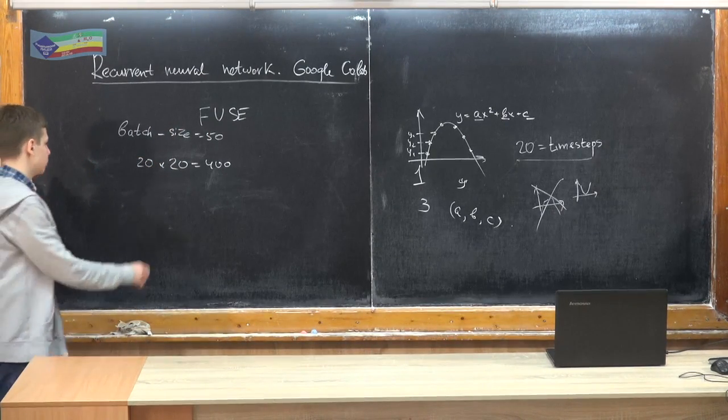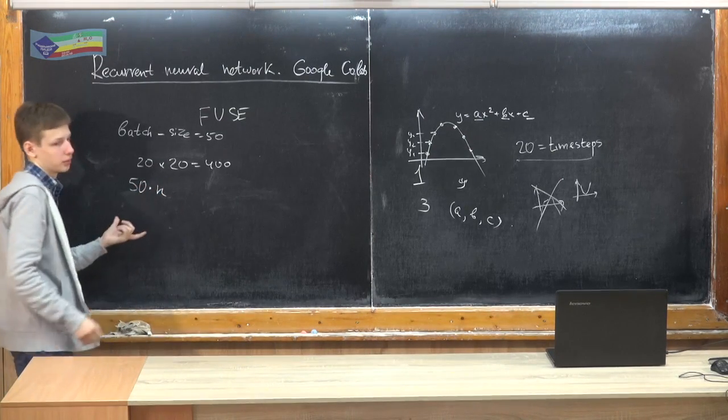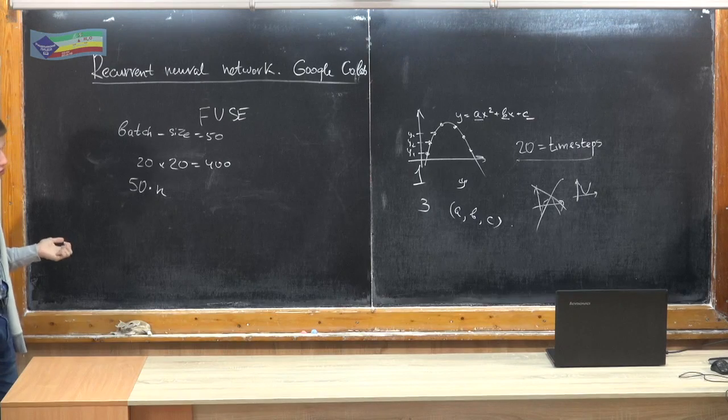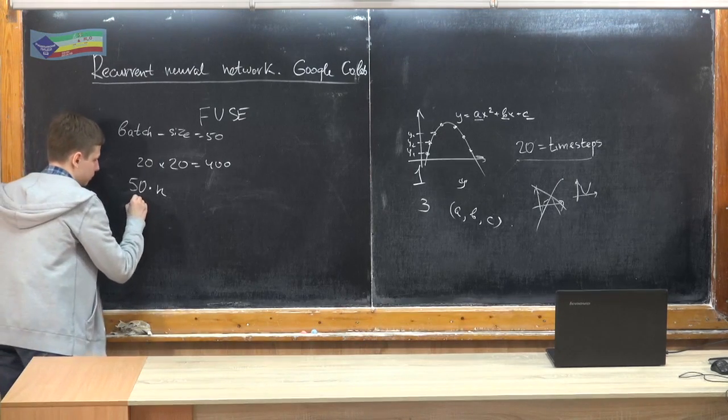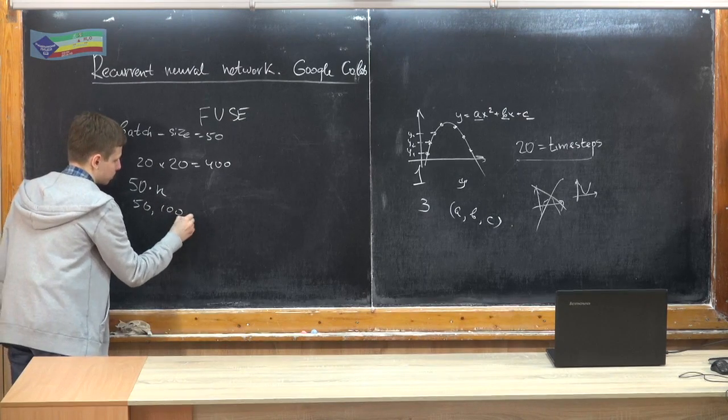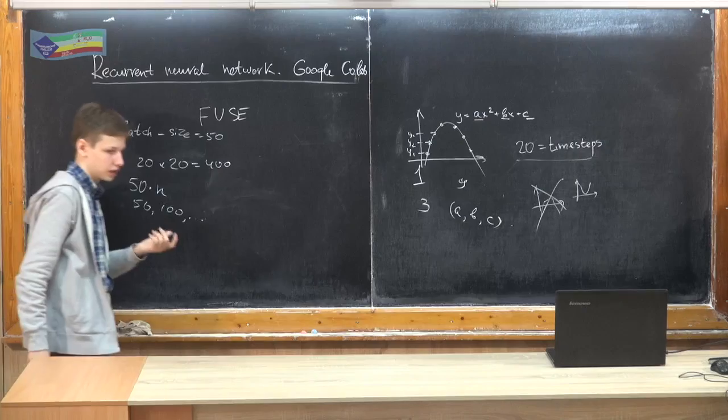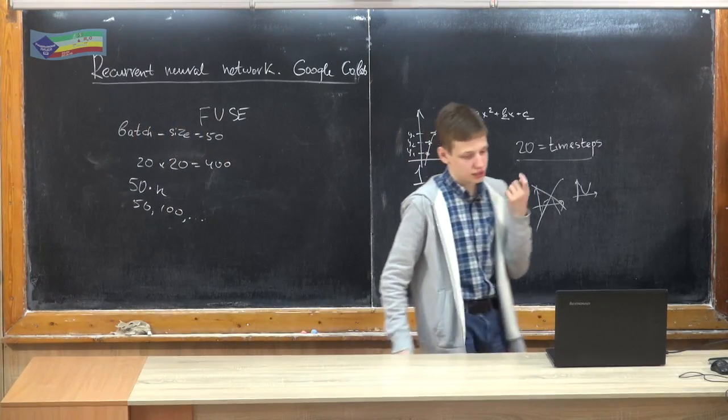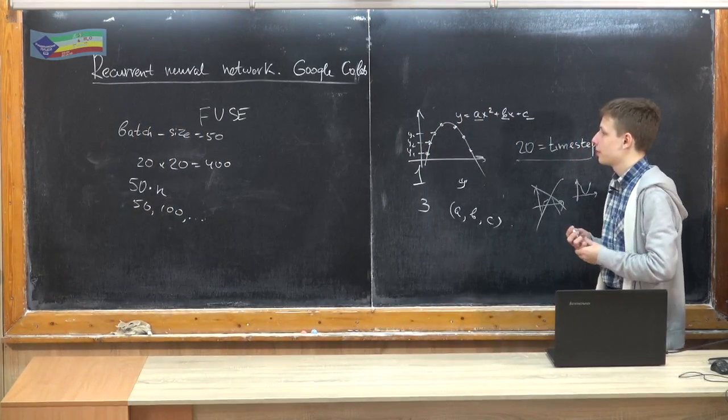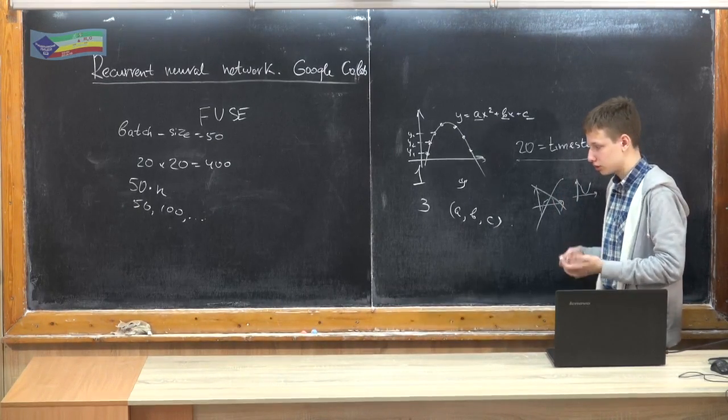You need always to have batch size equal to 50. You need always to have 50 multiplied by n parabolas, where n is some integer. So you can feed to this neural network only 50, 100 parabolas and so on. And it can be frustrating. For example, if we want to take one parabola and get its parameters, Keras throws an error.